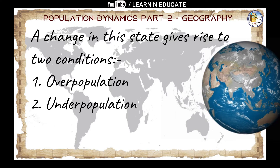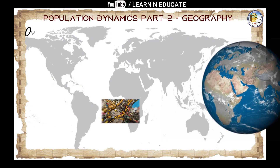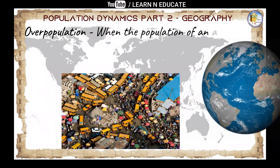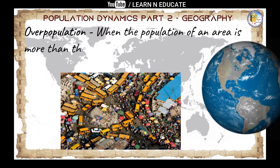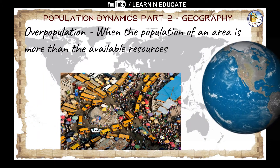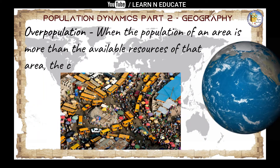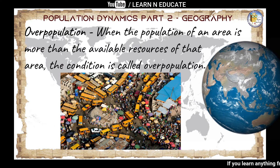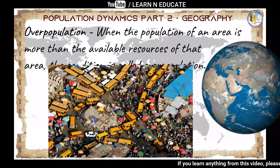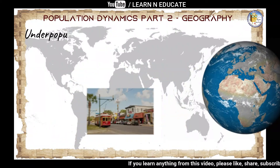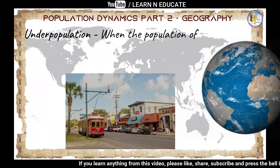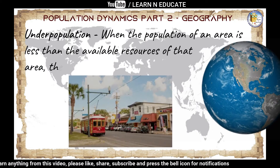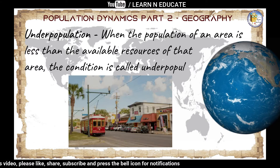Overpopulation: when the population of an area is more than what the available resources of that area can support, the condition is called overpopulation — that means population is more than the available resources. Underpopulation: when the population of an area is less than the available resources of that area, the condition is called underpopulation.